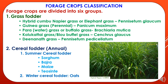Forage crops are divided into six groups. The first is grass fodder, which includes hybrid Napier grass or elephant grass (Pennisetum purpureum), guinea grass (Panicum maximum), para grass or buffalo grass or water grass (Brachiaria mutica), Kalakot grass or blue buffalo grass (Cenchrus ciliaris), and Dinanath grass (Pennisetum pedicellatum).